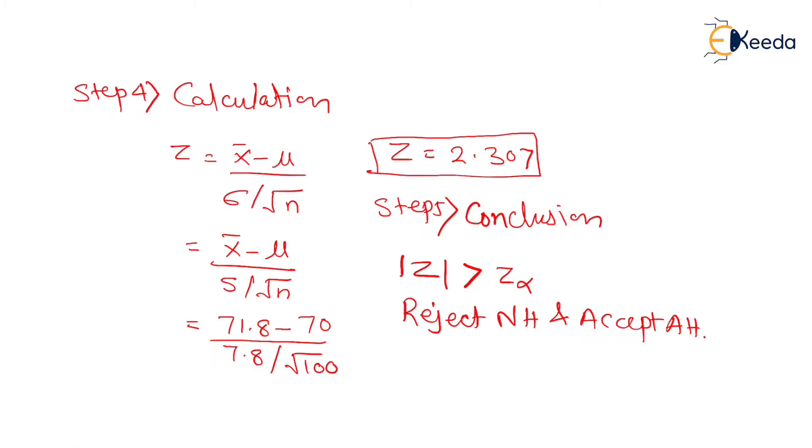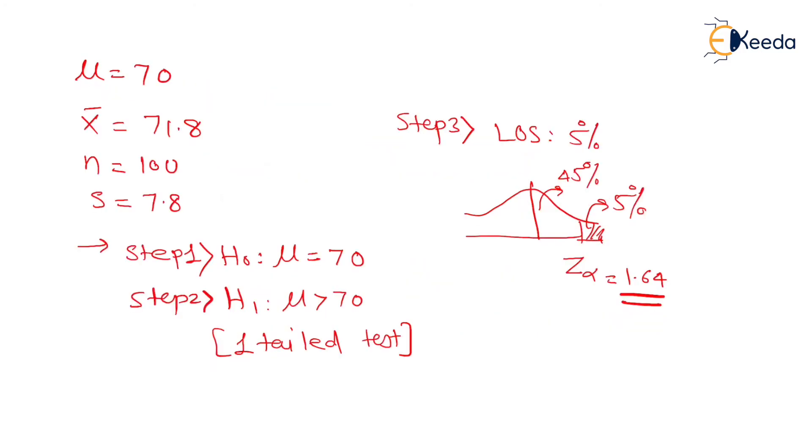Now friends, let us understand what exactly is meant by rejecting NH and accepting AH. So rejecting NH, that means you're rejecting this. Accepting AH, that means you're accepting it. Now tell me, what is the conclusion? You're rejecting μ equal to 70 and accepting greater than 70, that means your simple conclusion is you're accepting this, right? The average lifespan of an Indian is more than 70 years since we accepted it.